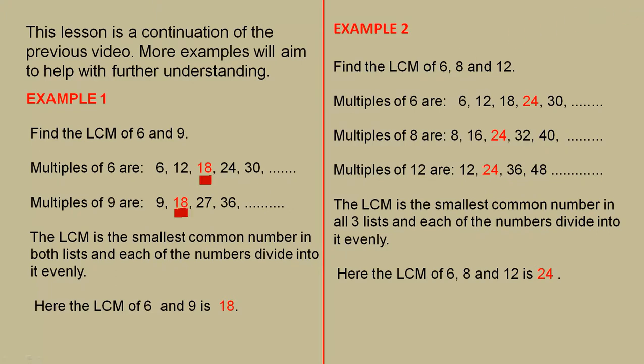Example 2. Find the LCM of 6, 8 and 12. The multiples of 6 are these. Here are the multiples of 8 and here are the multiples of 12. Again, the LCM is the smallest common number in all three lists and each of the numbers divide into it evenly. So here the LCM of 6, 8 and 12 is 24. There, there and there.